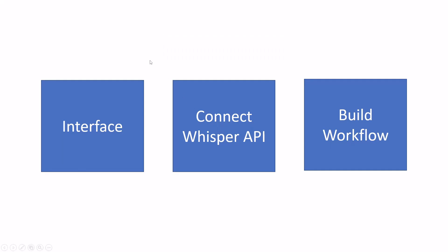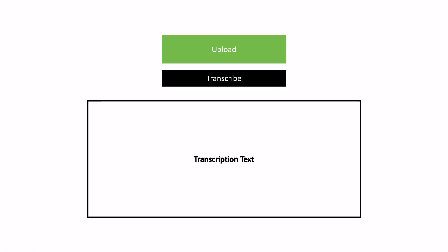What we are going to achieve: first, we are going to build our interface using Bubble.io — Bubble.io is a no-code editor, so if you know nothing about Bubble.io don't worry, it's not rocket science. Then we'll connect OpenAI's Whisper API with Bubble in the back end, and then we will build our workflow so the interface and the Whisper API can talk to each other. We are not going to use any kind of programming language or coding.